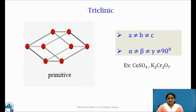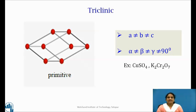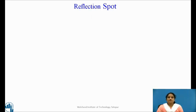In the triclinic system, none of the crystal axes is perpendicular to any of the others. The edge lengths along the three axes are all different. The lattice parameters are A ≠ B ≠ C, and alpha, beta and gamma are all unequal and none are equal to 90°. Triclinic lattice has only one possible arrangement, which is simple, having lattice points at all eight corners of the unit cell. We have now seen all the crystal systems in detail.